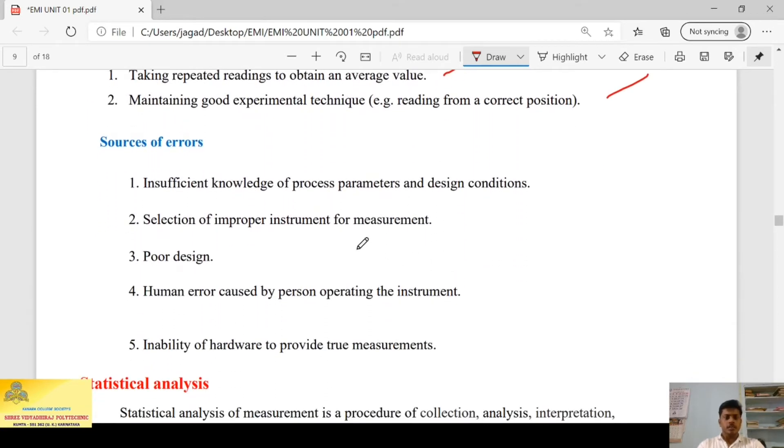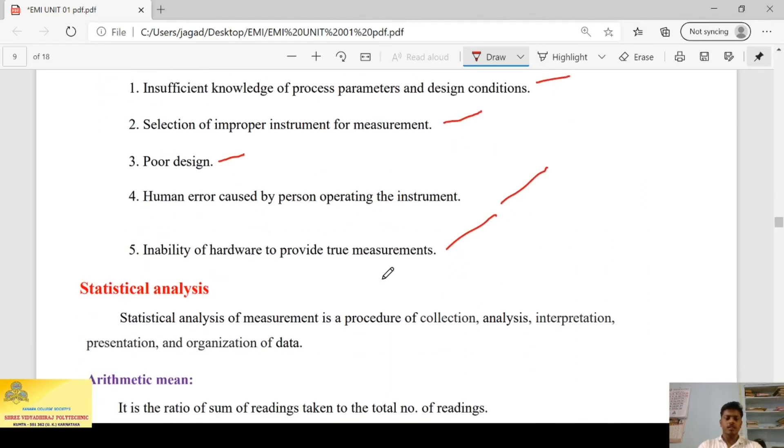Next we have sources of errors. This is reasons of errors. Source of error means research to occur errors. What are those sources? First one, insufficient knowledge of process parameter and design condition. Selection of improper instrument for measurement, poor design of instrument, human error caused by person operating the instrument, inability of hardware to provide true measurements. These are the sources of errors.